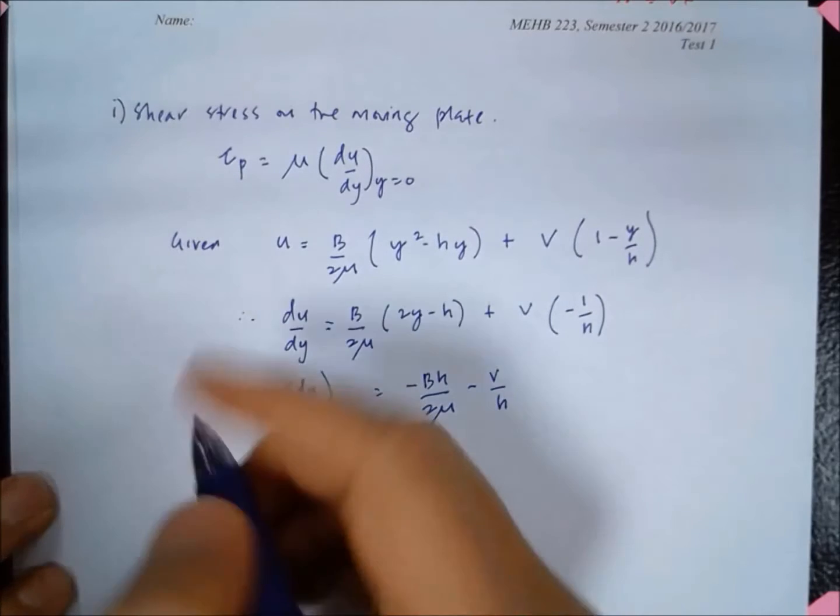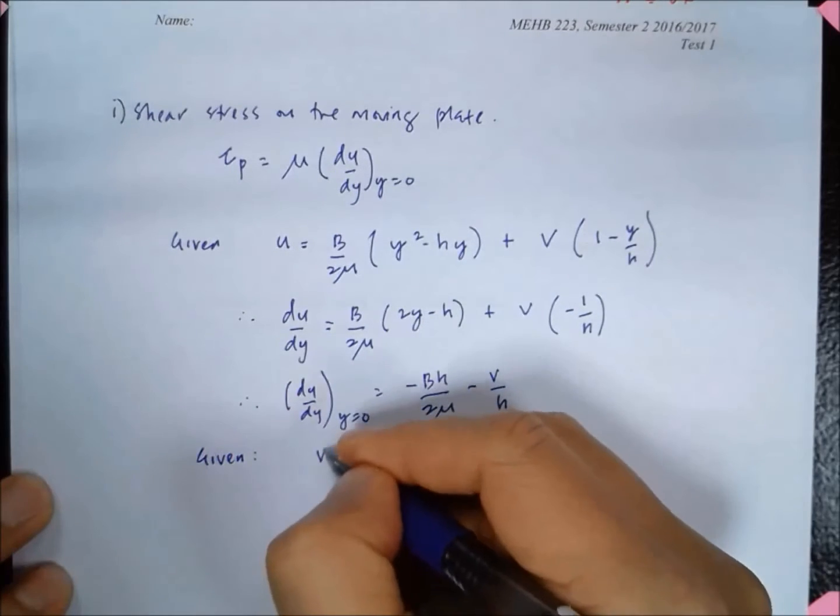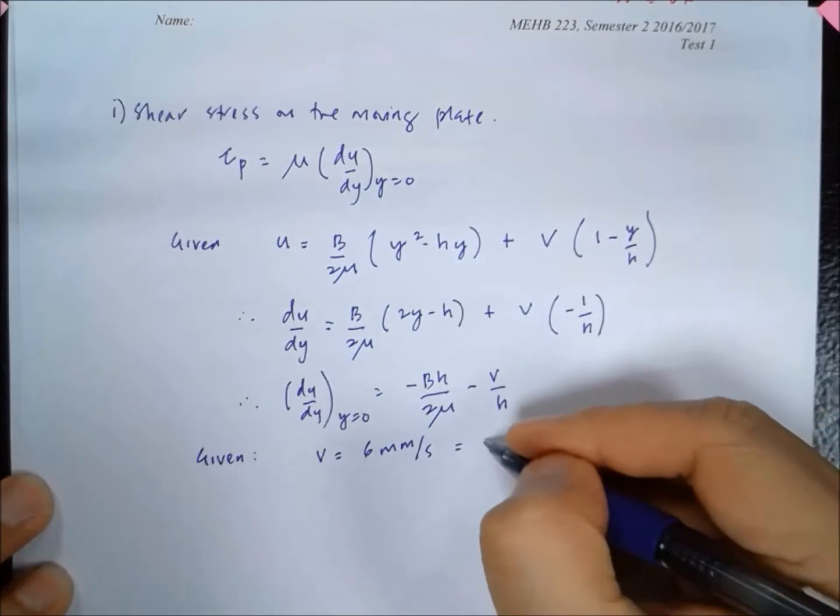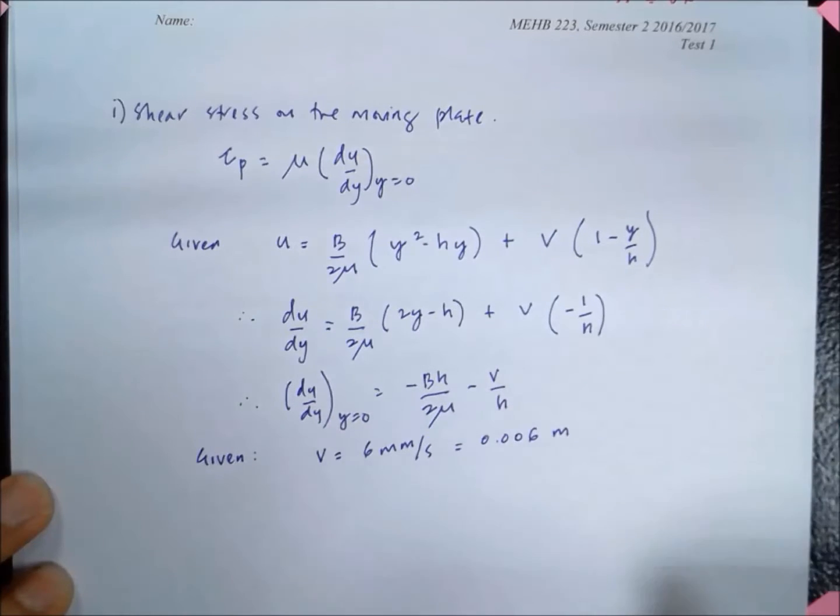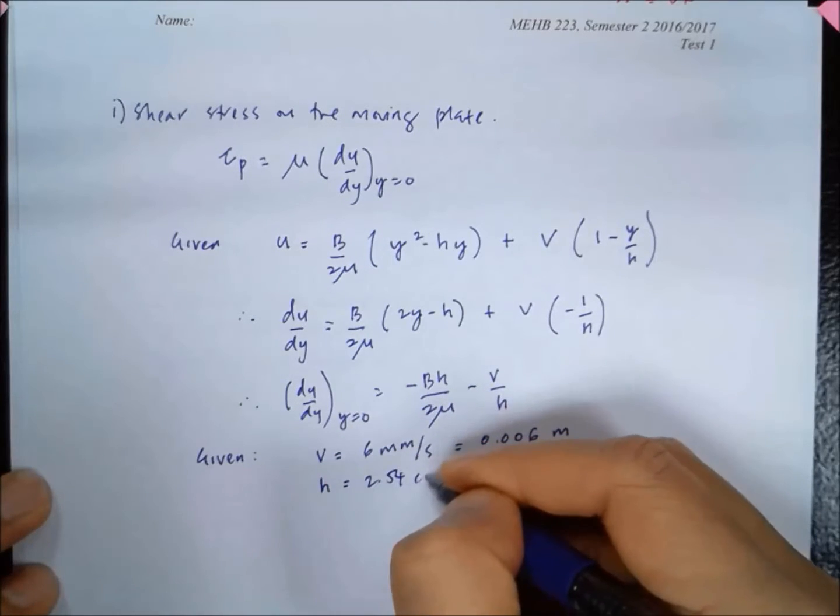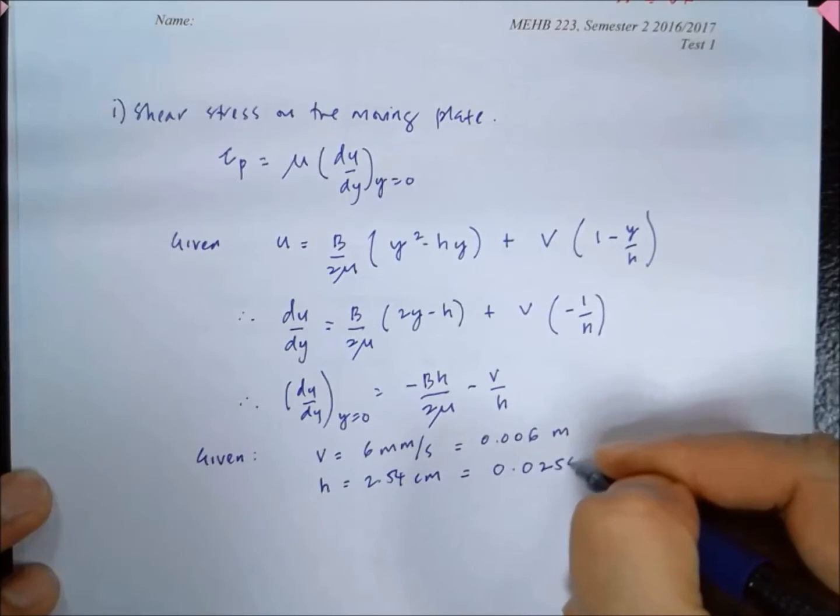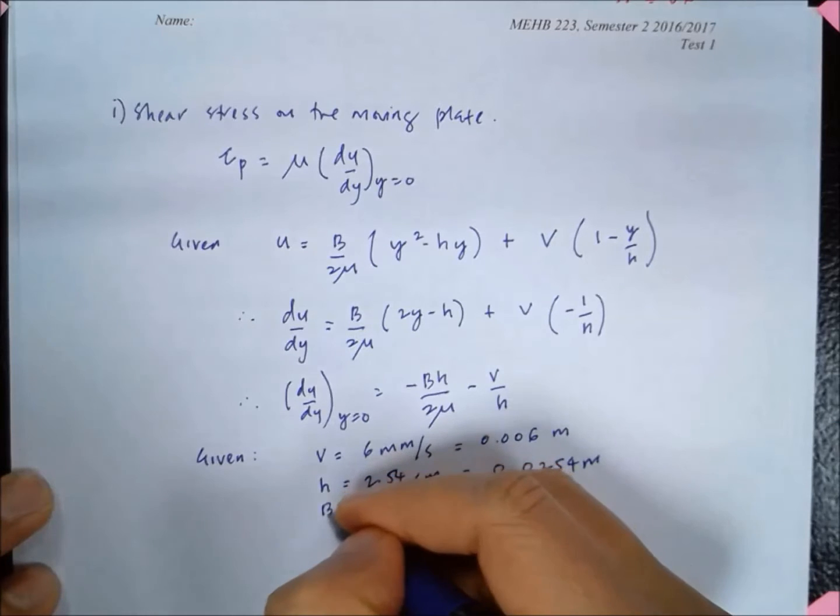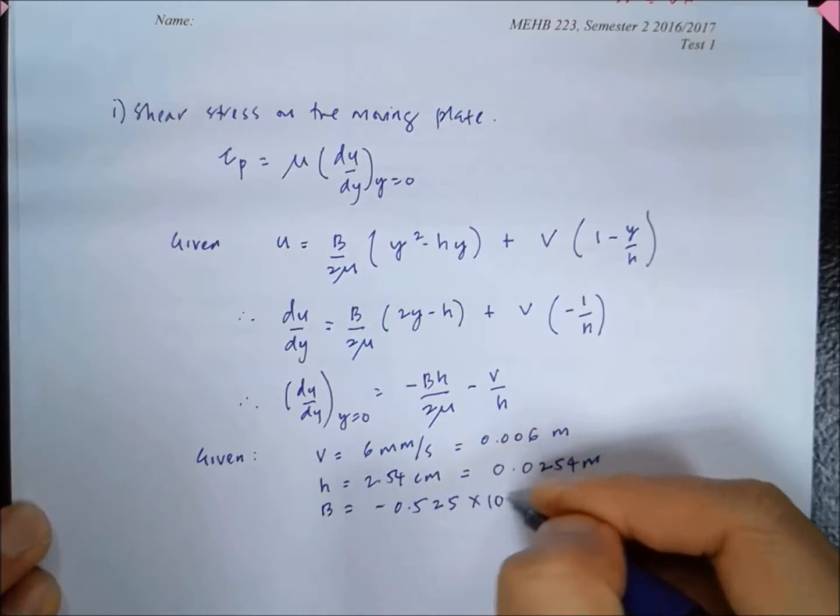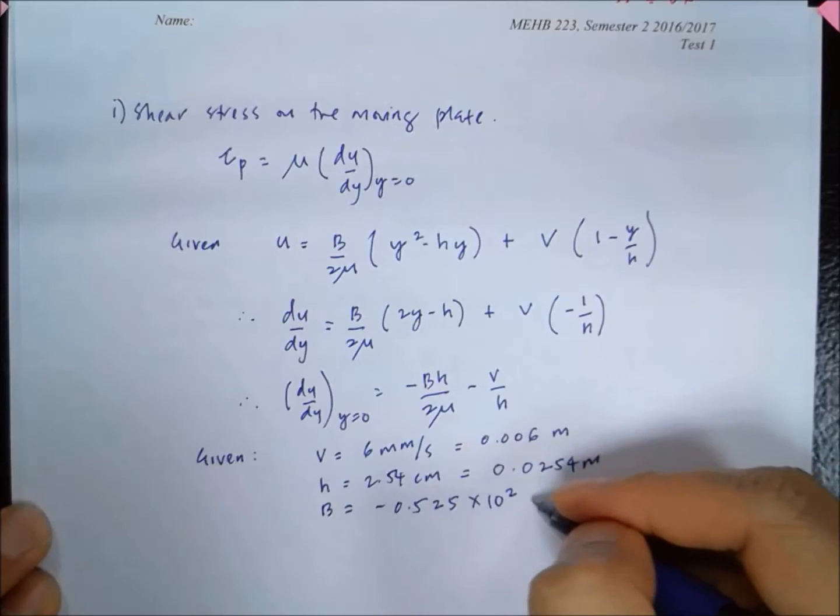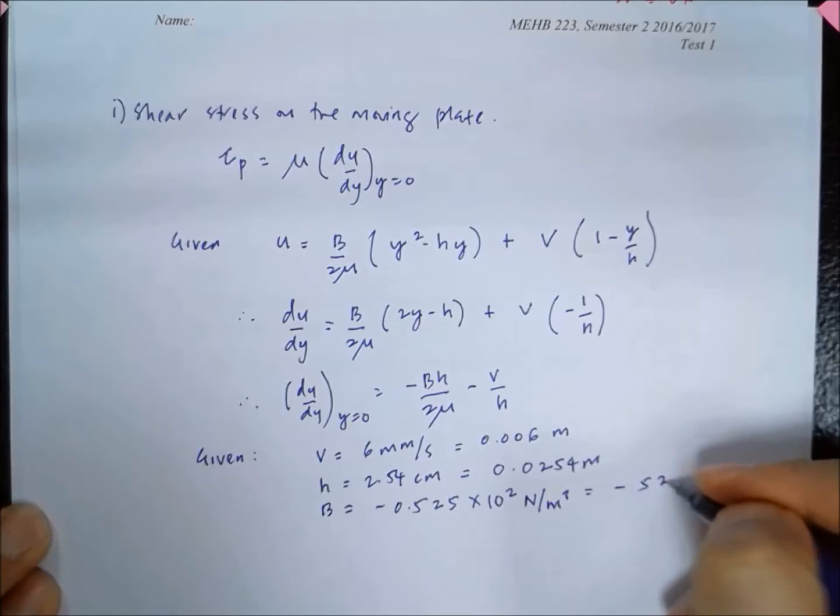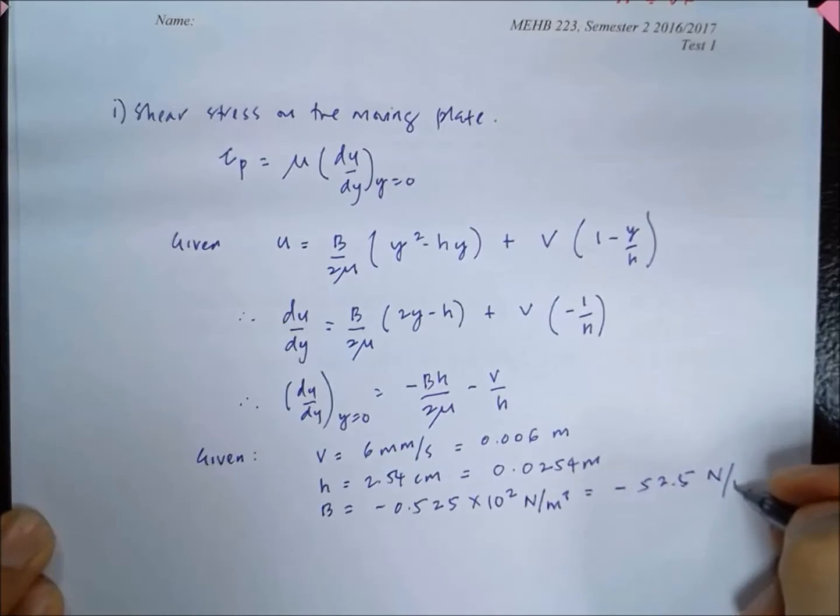We are given that V equals 6 millimeters per second, so that is 0.006 meter. h equals 2.54 centimeters, so 0.0254 meter. And B is just a constant, minus 0.525 times 10² newton per meter cube, which equals minus 52.5 newton per meter cube.